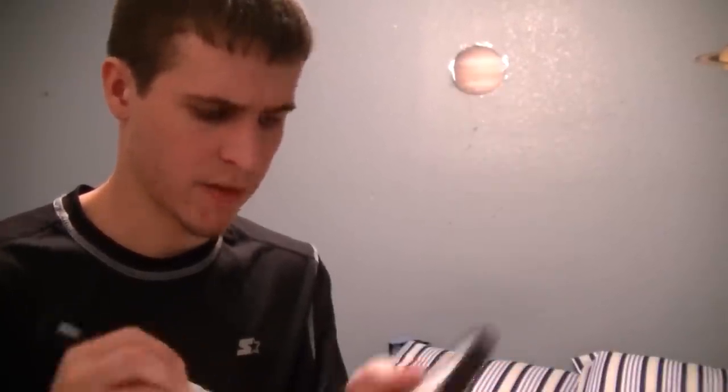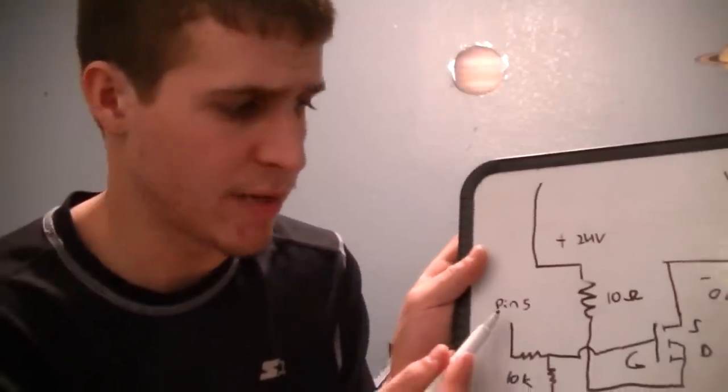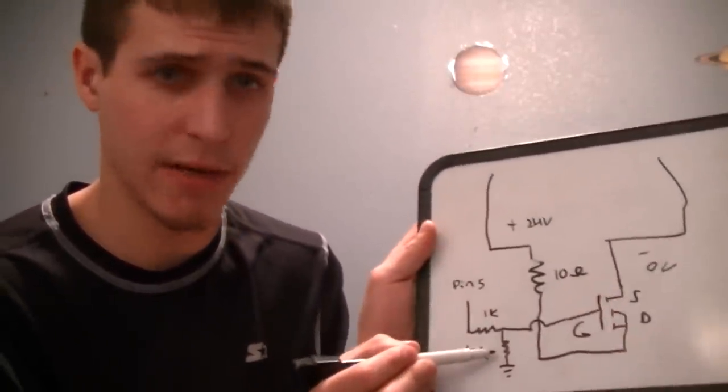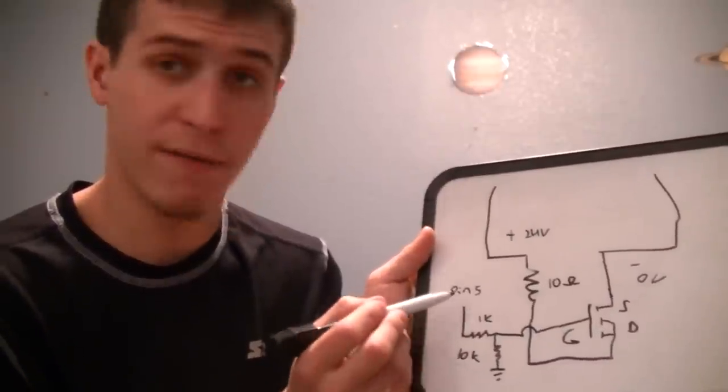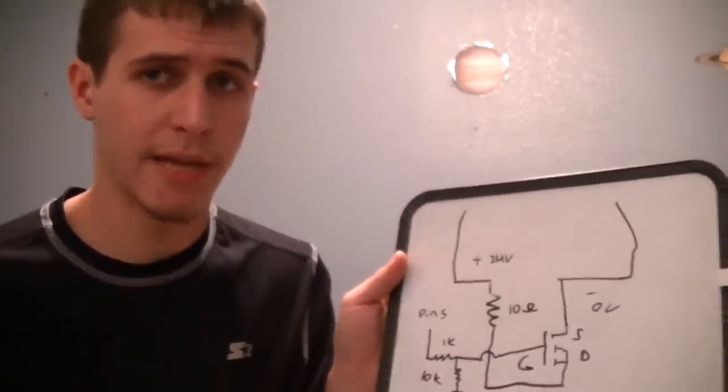let's just say pin five. So this is going to pin five on our Arduino and this is a one K. So we have a 10 K going to ground and we have a one K going to pin five on our Arduino. So now what do we have?